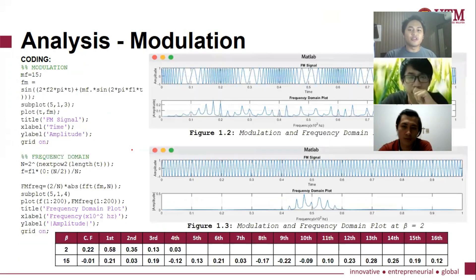Moving on, we're going to see how modulation and how we produce the frequency domain plot. So this is the coding we can see. As you can see here, the modulation index is 15 and this is the coding for frequency domain plot. And this is the result.